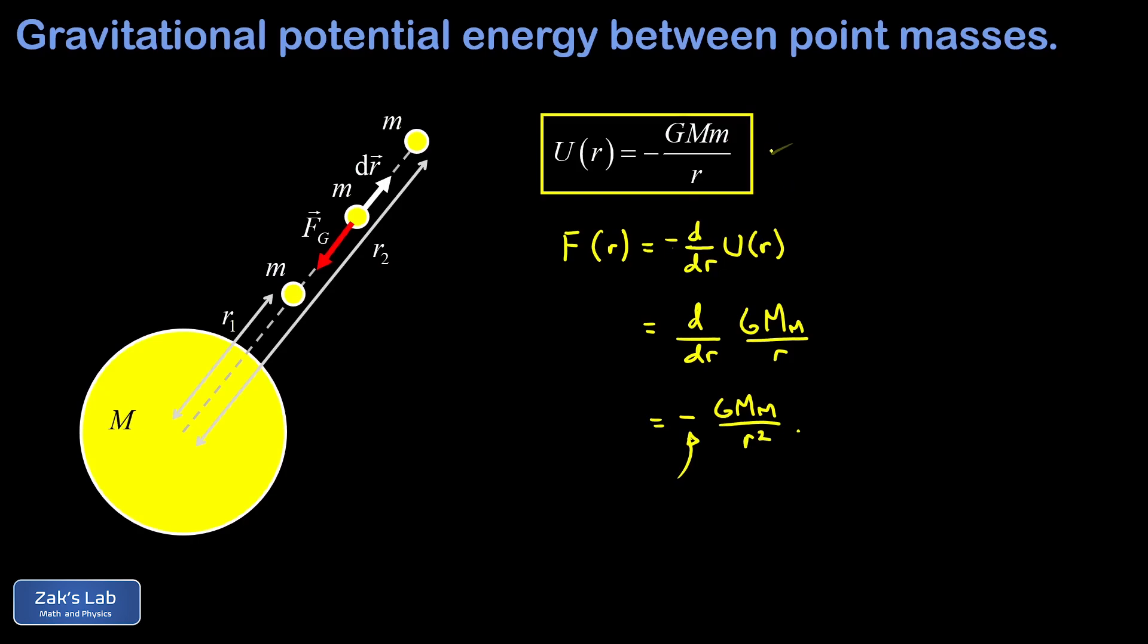For now, we're done. In the next video, we're going to show that this general expression for the gravitational potential energy between two point masses reduces to the familiar MgY for an object that's constrained really close to the surface of the earth. I'll post a link to that video at the upper left, and I'll see you there.